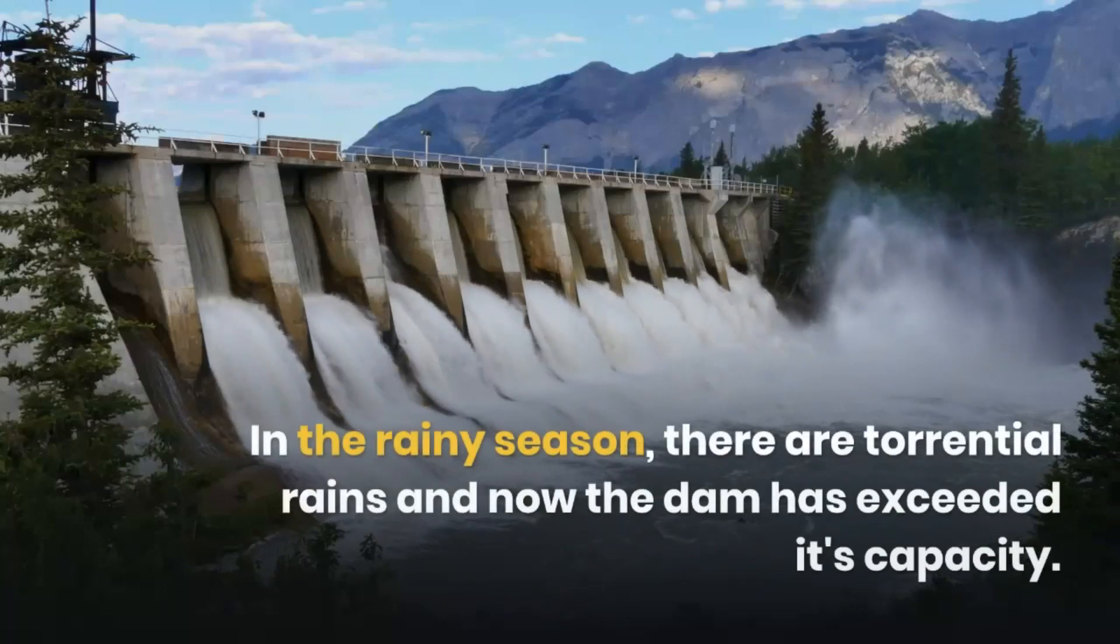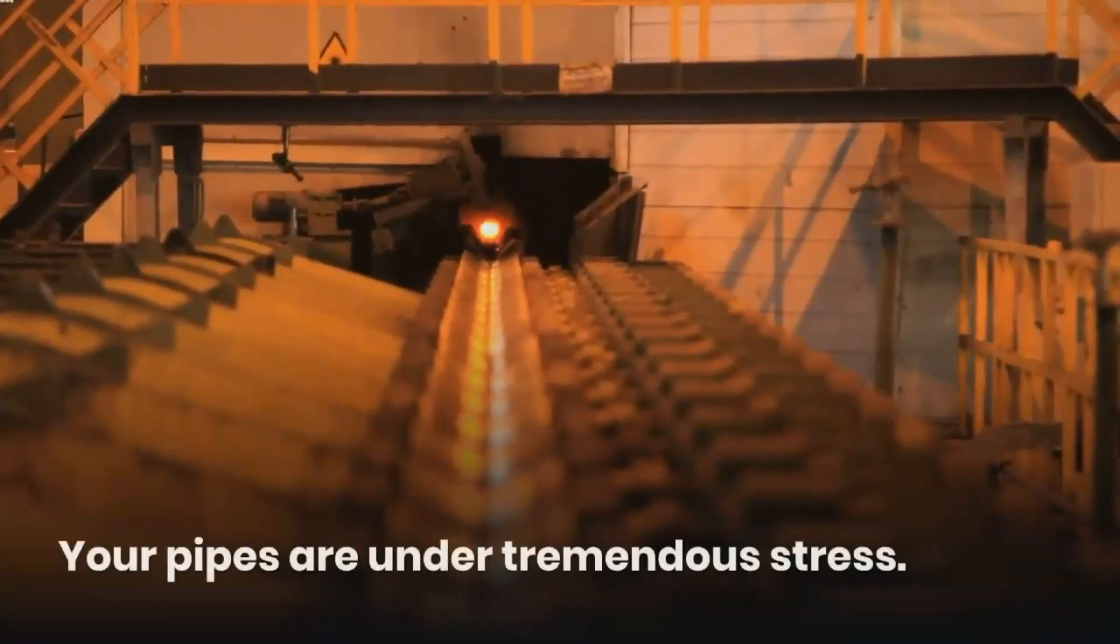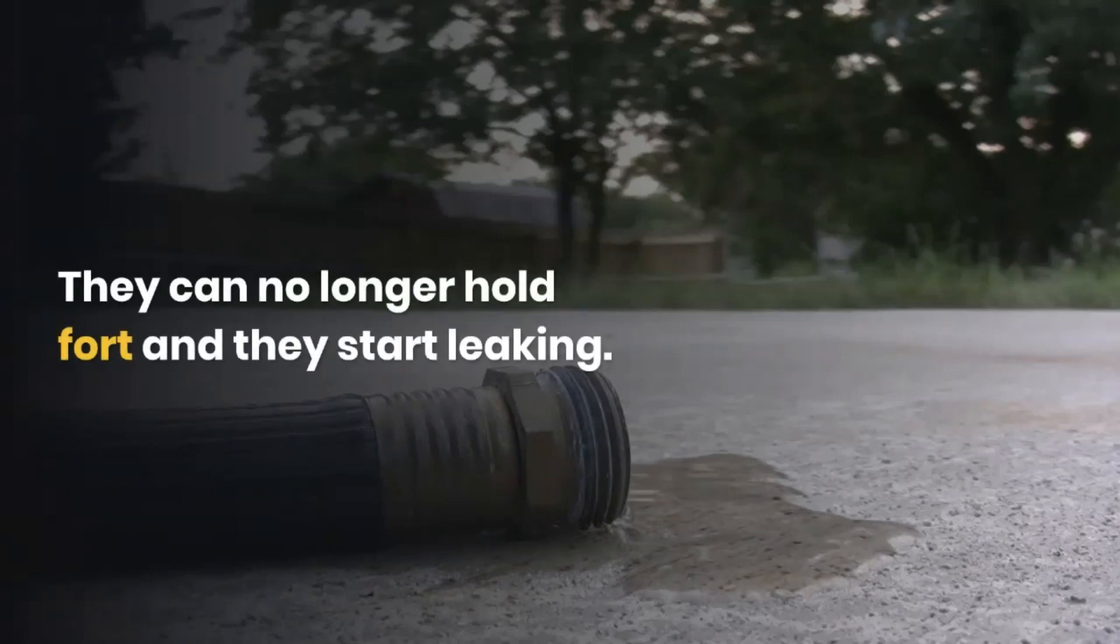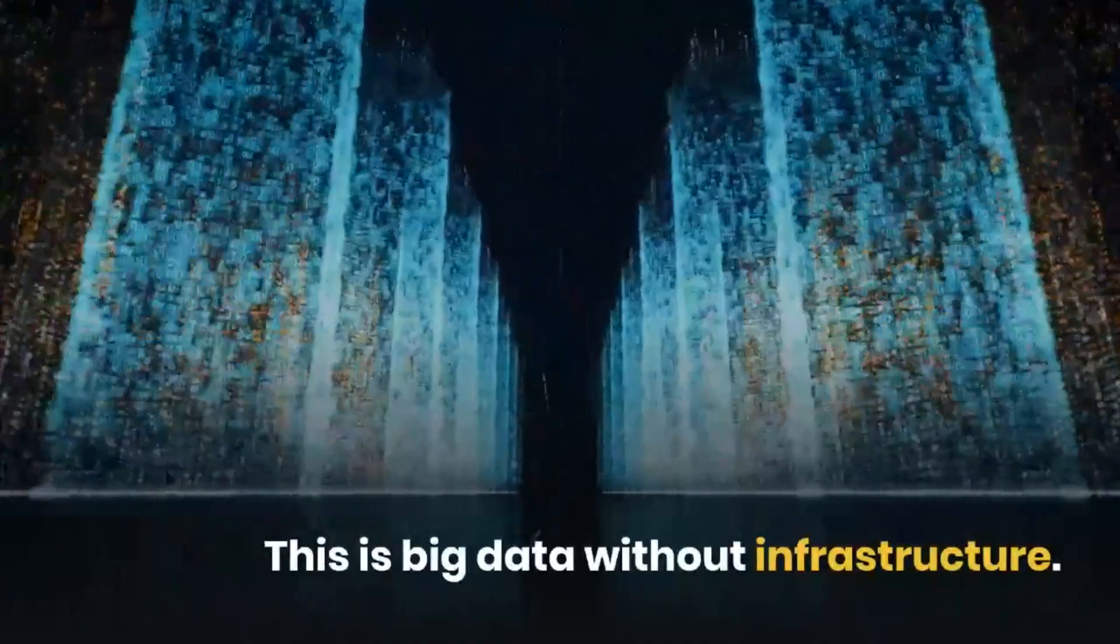In the rainy season, there are torrential rains and now the dam has exceeded its capacity. There's so much water and it's overflowing everywhere. Your pipes are under tremendous stress. They can no longer hold forth and they start leaking. This is big data but without infrastructure.